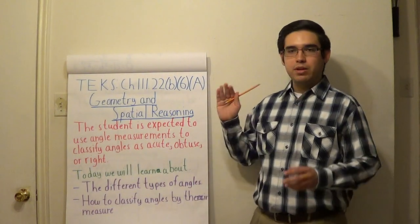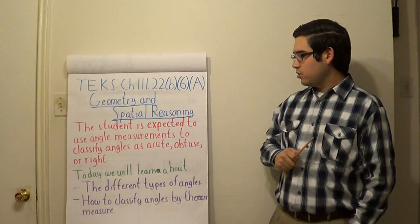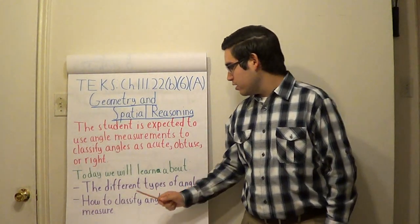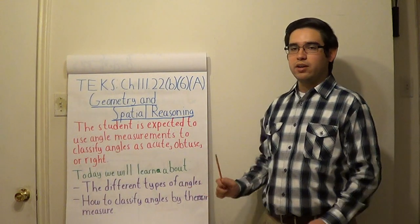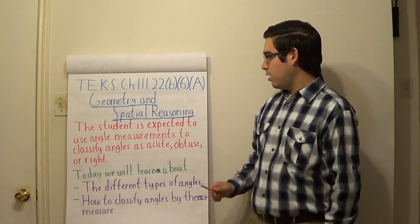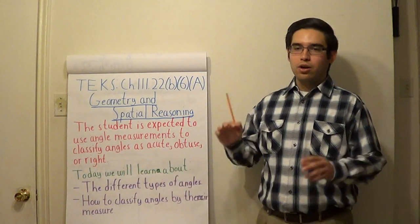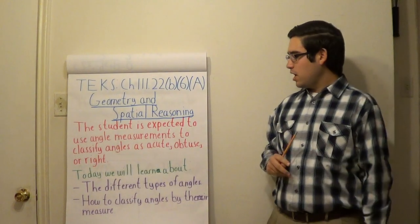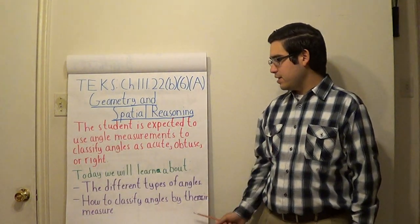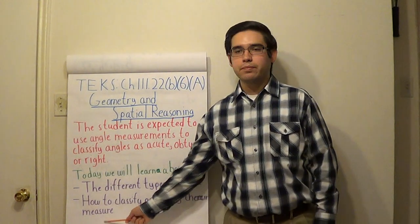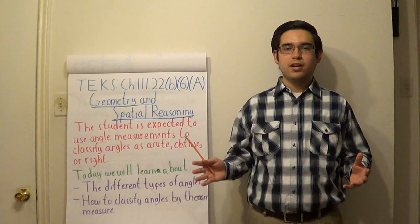Today what we're going to be learning about is the different types of angles out there, namely acute, obtuse, or right, and also how we can classify them based on their measure. So that's what we're going to learn.